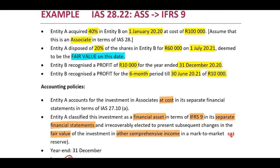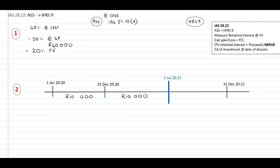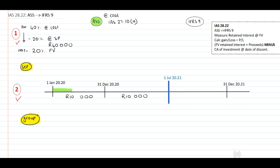So let's refer to our calculations. Step number one: identify the change. We now know that this is an associate. They sell 20%, and this will become a normal IFRS 9 investment. Step two, we're going to look at our timeline. At the top of our timeline, we need to look at our separate records of our investor. At the bottom, we look at our group records. In the separate record at the top, we know that this is an associate for this period on our timeline.